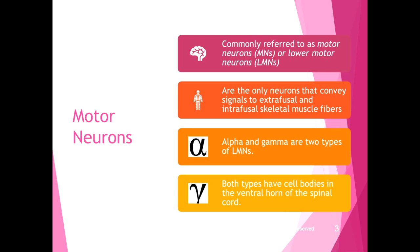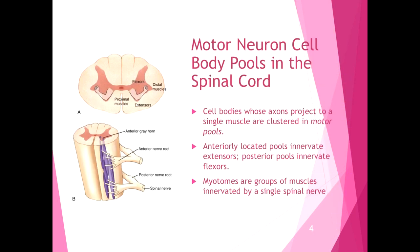There are two different types of lower motor neurons: alpha and gamma. Both alpha and gamma have cell bodies in the ventral horn of the spinal cord, whereas the motor tract neurons or upper motor neurons have their cell bodies in the cerebral cortex.